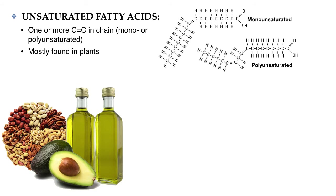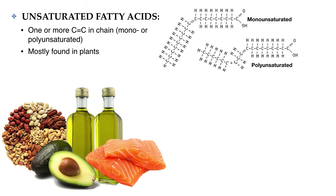They're also found in avocados, nuts, and seeds. They can also be found in animal sources like fatty fish such as salmon. They are usually liquids at room temperature, which is why oils are liquids at room temperature. Avocados, seeds, and nuts may look solid, but when their fats are extracted, the fats are liquids.